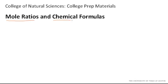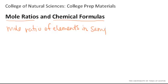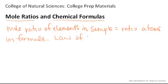Let's look at mole ratios and chemical formulas and how these two relate to one another and how we can use them. Basically, the relationship is that the mole ratio of elements in a sample has to be the same as the ratio of the atoms in the chemical formula. And this is all due to the law of constant composition.